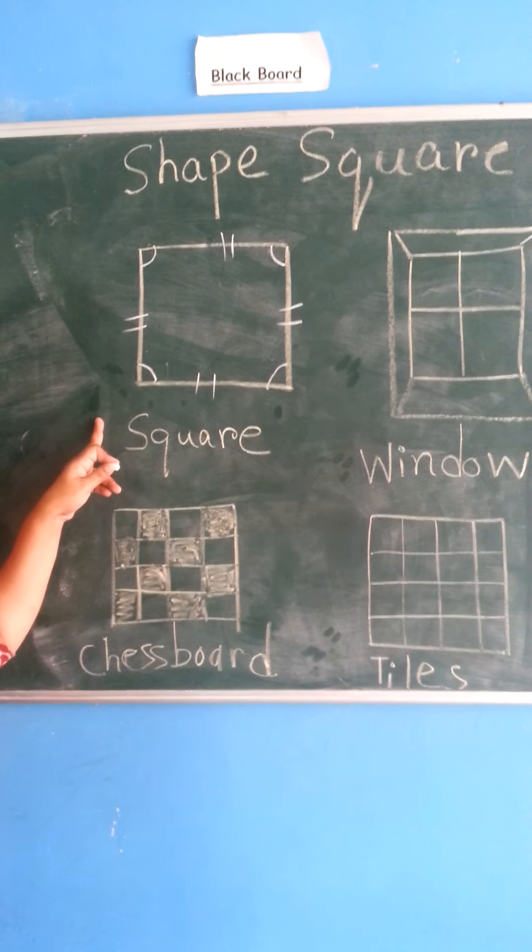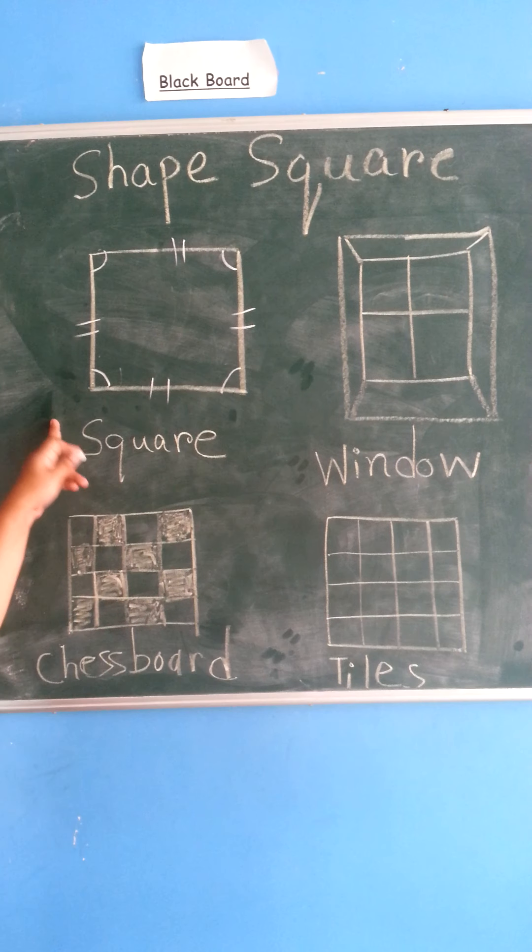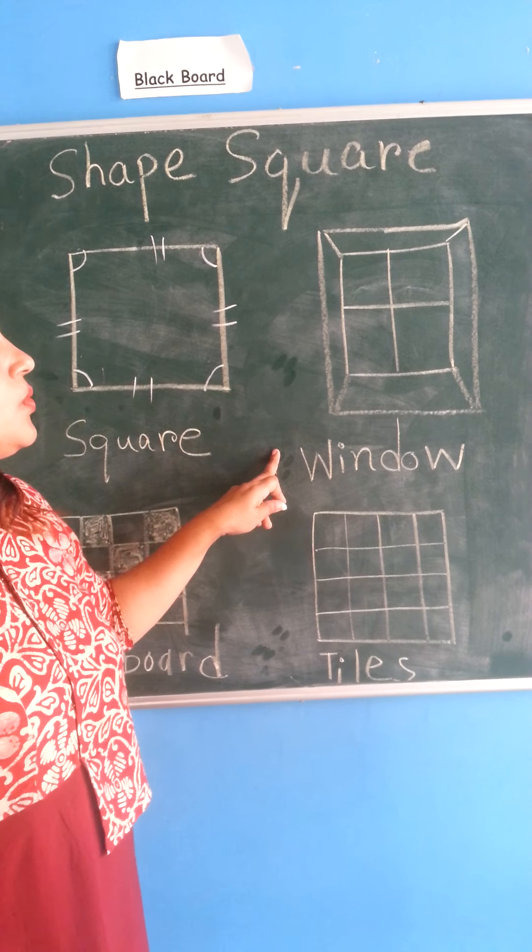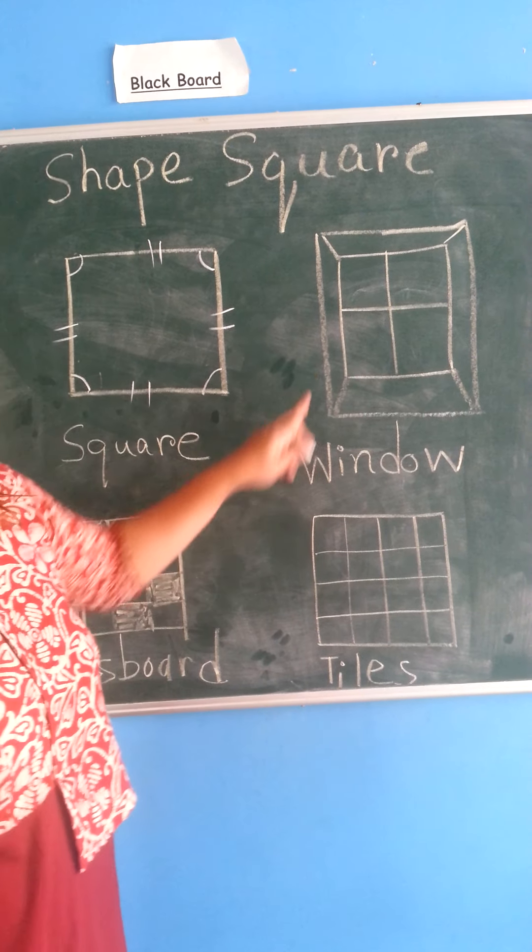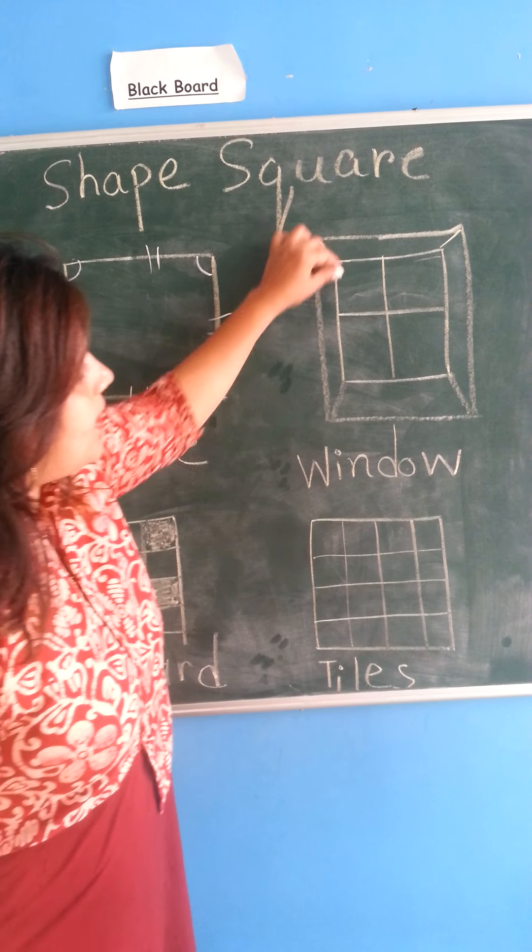And what are the things that are coming in square shape? Let's see. See this window? Dekhu ye window. Window kunsa shape hai? Square shape.